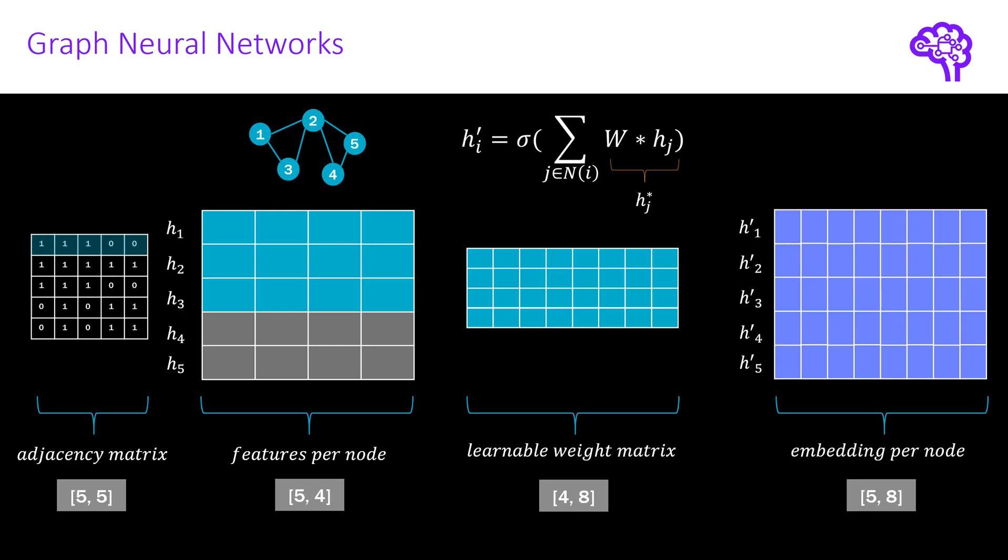Note that I added self-loops in this adjacency matrix, so that each node is also connected to itself. This way we can easily include the feature vector of node 1 into this aggregation. Now the way matrix multiplication works is that we multiply each row with each column and then sum up the values. That means, in this case, we are left now with the sum of these transformed node features of node 1, 2 and 3.